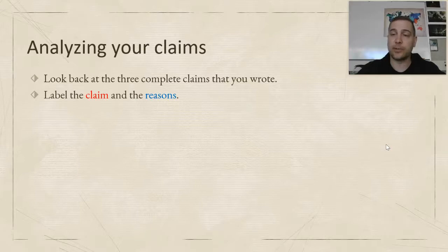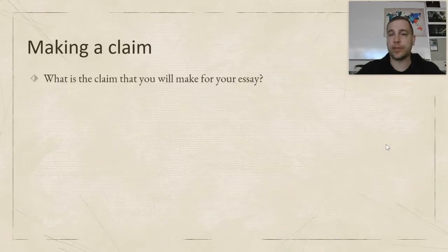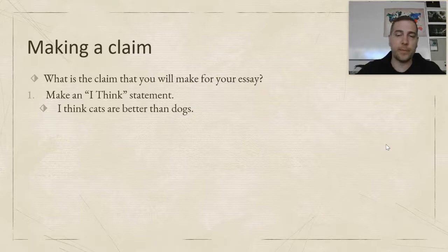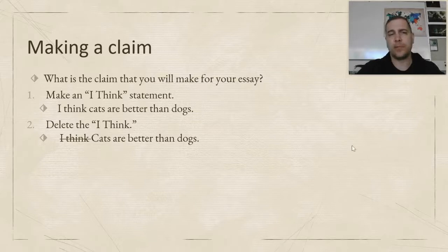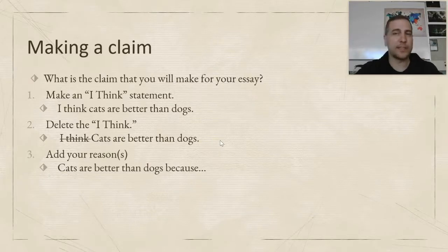Now let's work on double-checking our claims. If you're having a hard time, you can always start with an 'I think' statement — for example, 'I think cats are better than dogs.' If you're writing a rough draft, putting 'I think' is more than fine. But your argument is going to sound more convincing and less like an opinion if you take out the 'I think' once you're done writing. Don't say 'I think cats are better than dogs' — just say 'cats are better than dogs.' It sounds more like you're stating a fact than an opinion when you do that. Then just add your reasons to the claim.